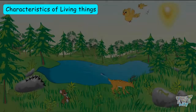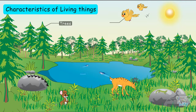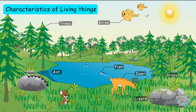Have you ever been to a backcountry? You can see and observe a variety of living things in the environment. There are trees, birds, grass, deer, fish, lizards, ants, rats, and so many living things in the environment.